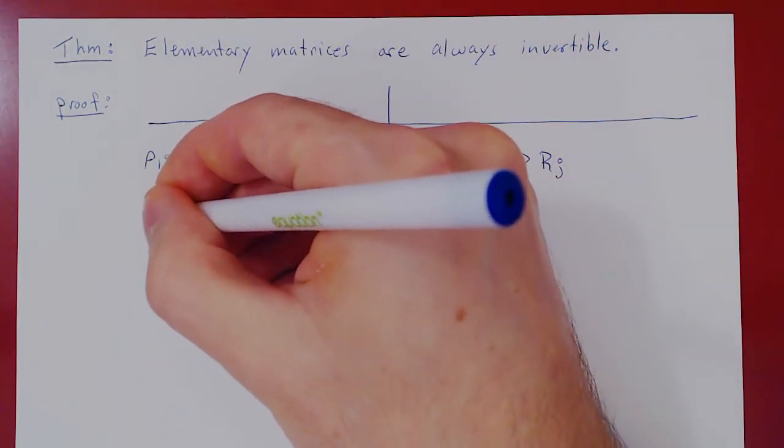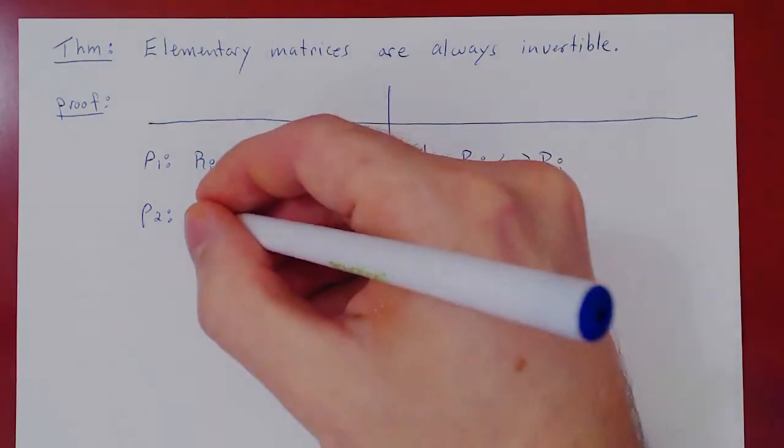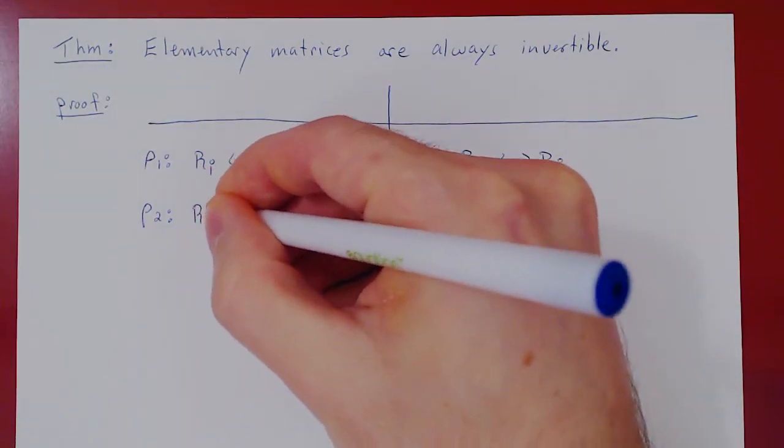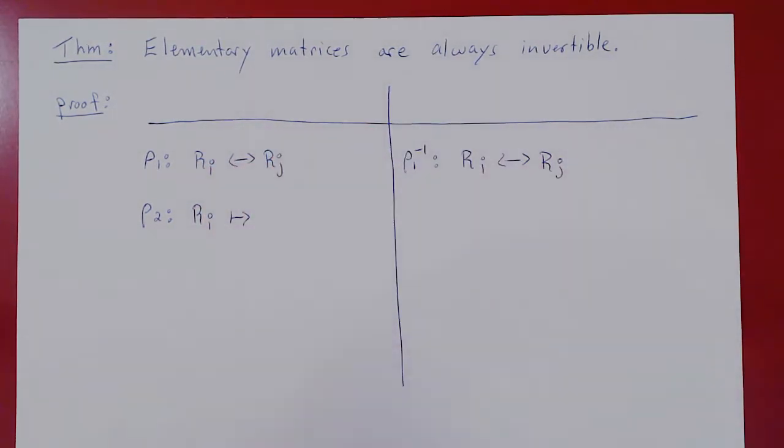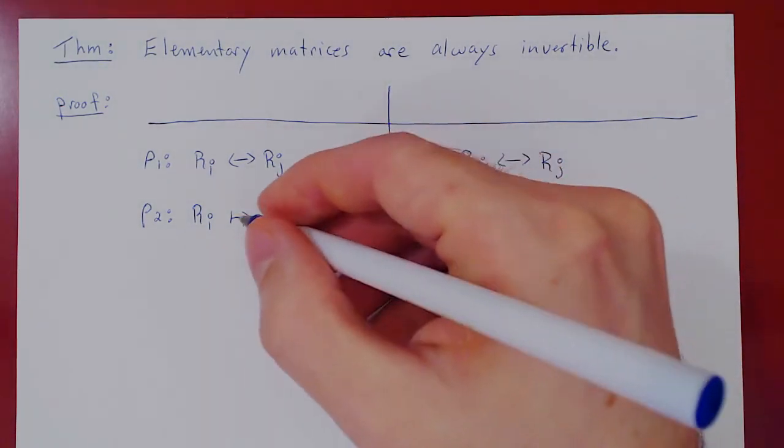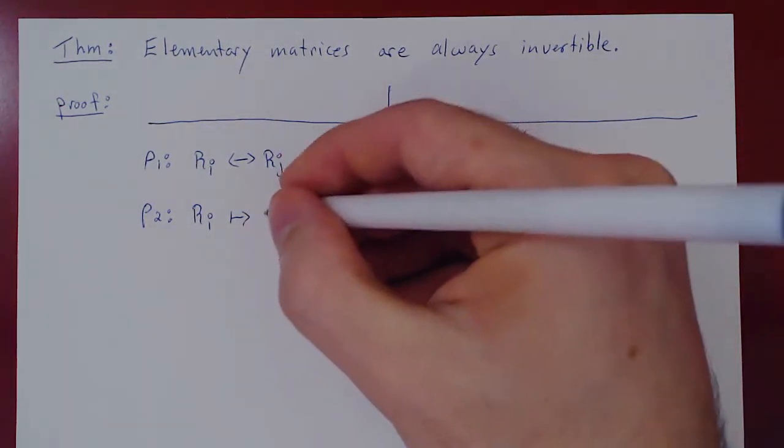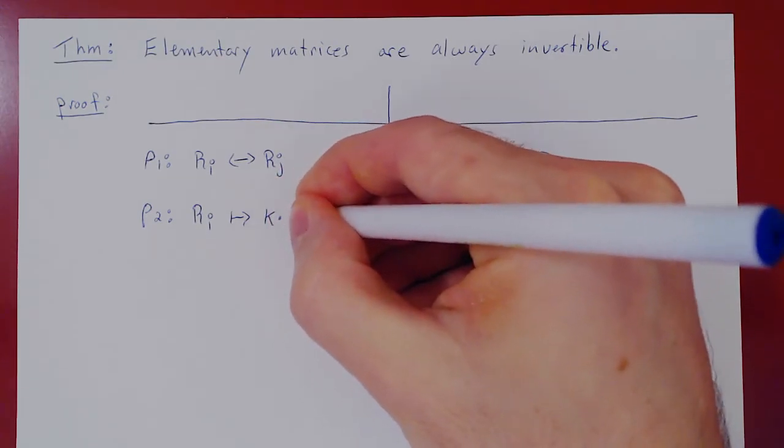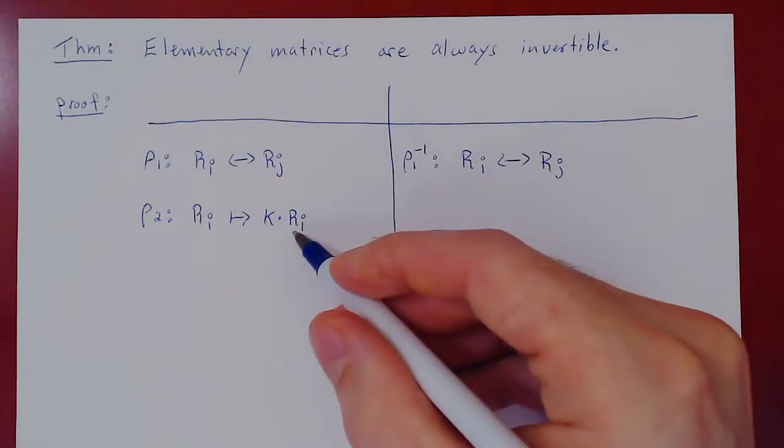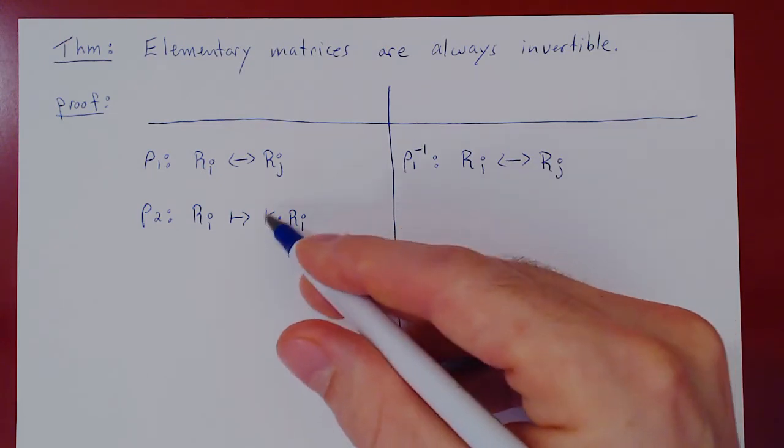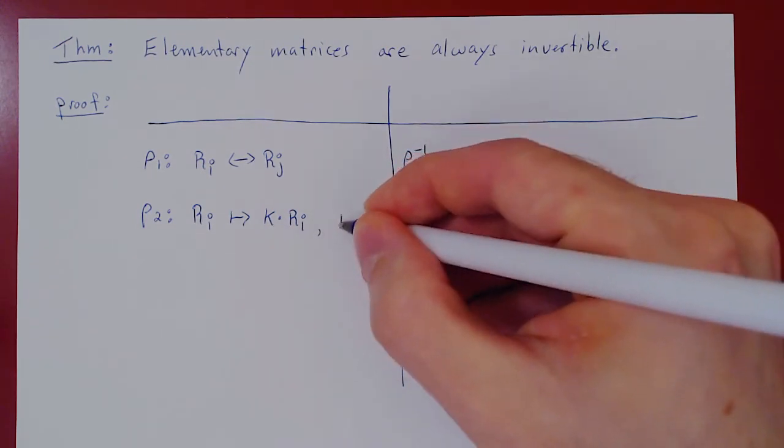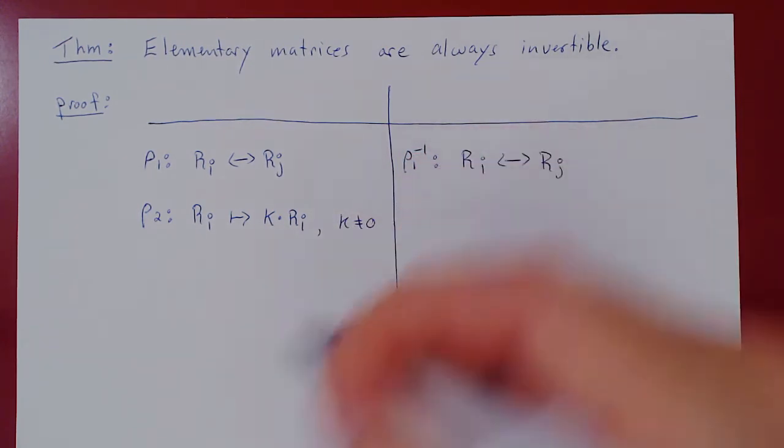What's the second type of row operation? Call this row 2. You take some row, you transform it—this is the transformation arrow—you transform it by multiplying: k times row i. So you multiply the entire row by a fixed constant,